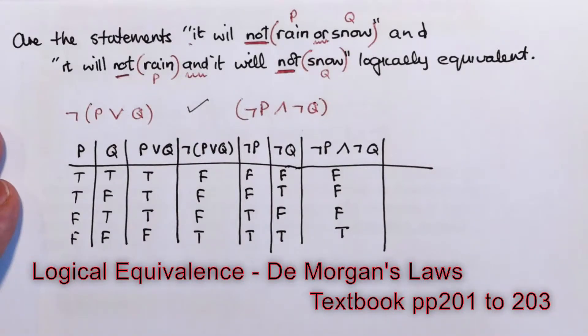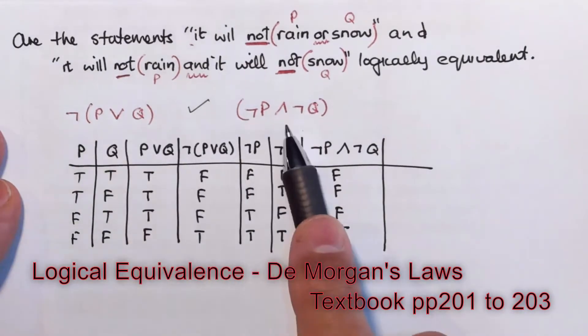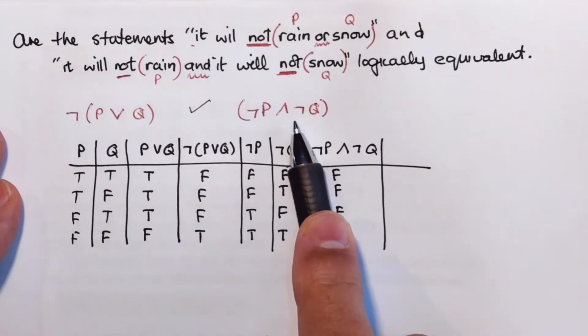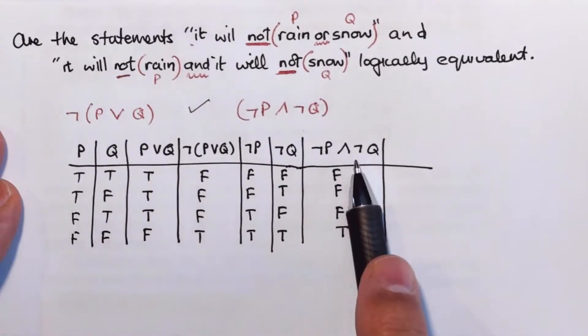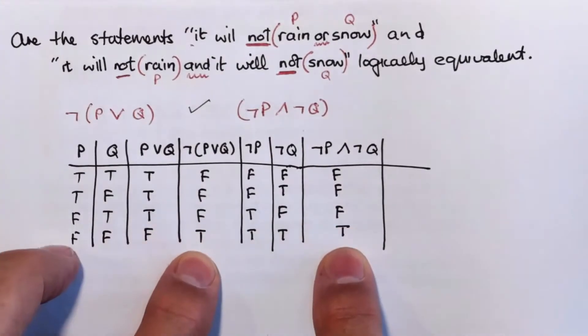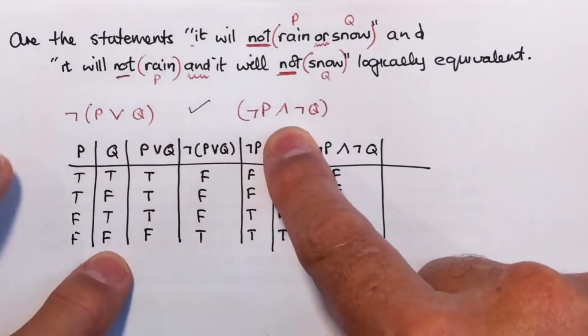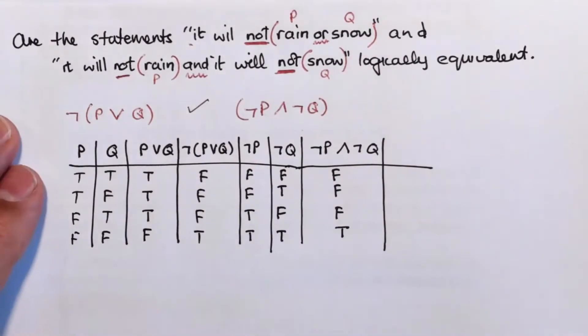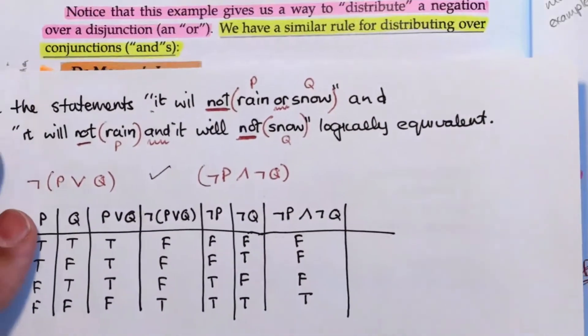Okay, welcome to part two of our video that works with propositional logic. It's chapter three in your book. The first part finished with this example where we were asking ourselves, are these two statements logically equivalent? We went through our truth tables and we indeed found that the outcomes are identical, so we could say that these two statements are logically equivalent. Now, this means something.